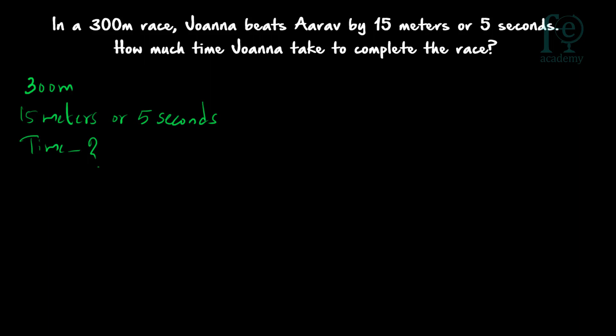Joanna will be winning by 15 meters or 5 seconds. The meaning is that the time taken by Adav to complete 15 meters is equal to 5 seconds. Both the time and the distance are given, which means the opponent Adav will be taking 5 seconds to travel 15 meters. So from the question we know Adav is the opponent, and Joanna is winning by 15 meters or 5 seconds, meaning Adav runs 15 meters in 5 seconds.